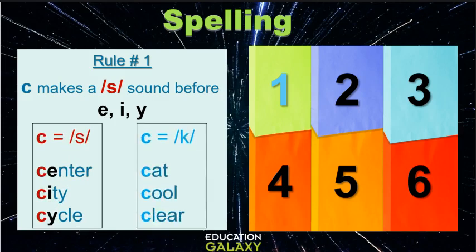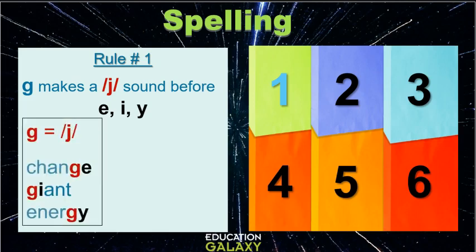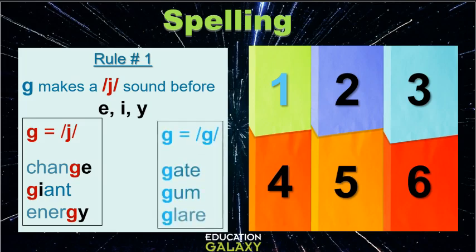It makes a K sound before everything else. Next, the letter G. It makes a soft J sound before E, I or Y such as change, giant and energy and it makes a hard G sound before everything else.